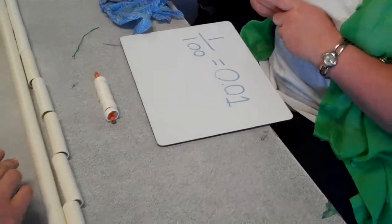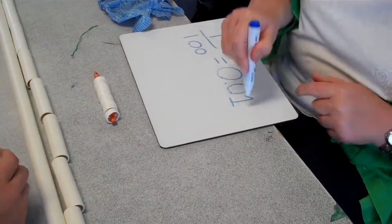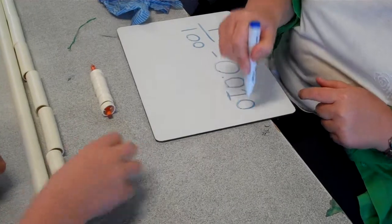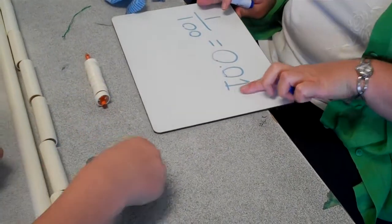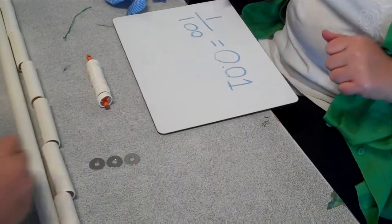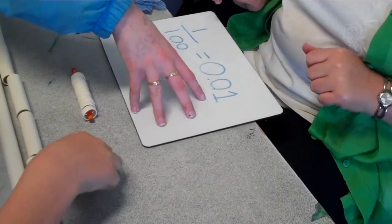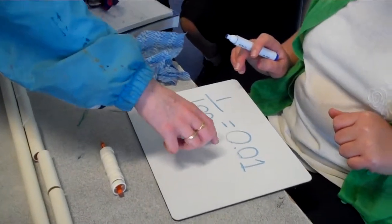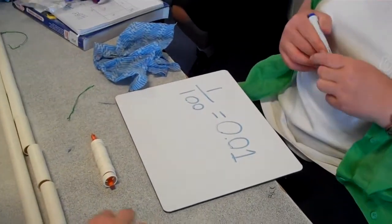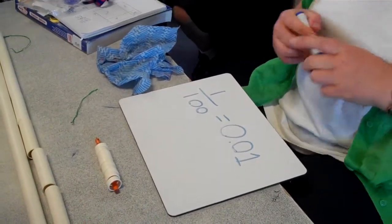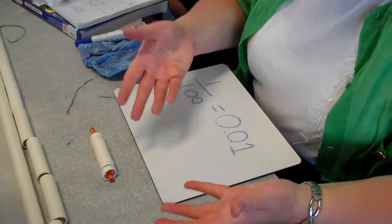What if I put a zero at the other end? Does that change the number? Yes it does — it changes it to ten. It was like ten backwards, but now it's like a hundred. Yeah, very good, terrific.